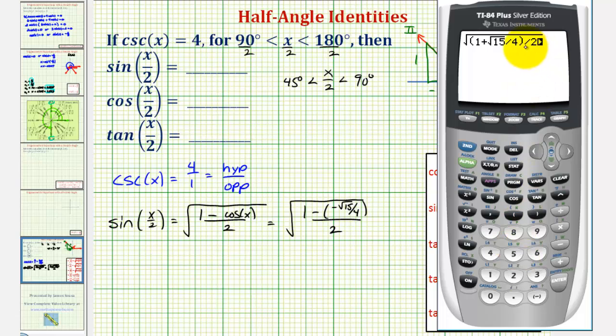We'll have one more parenthesis to end the larger square root. And enter. So the sine function value is approximately 0.9920.